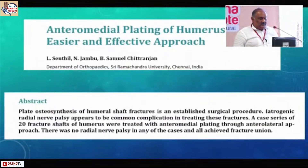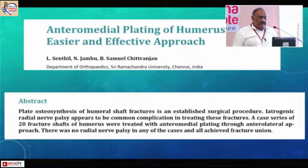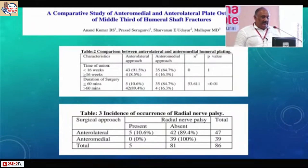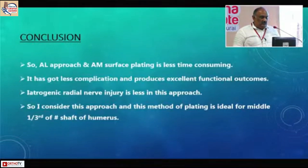A study from Ramachandra University also found iatrogenic nerve palsy to be a concern, but in 20 fractured shaft of humerus cases treated with anteromedial plating through an anterolateral approach, there was no radial palsy. A comparative study by Anand Kumar et al. found the incidence of radial nerve palsy was five cases in anterolateral plating versus nil in anteromedial plating.